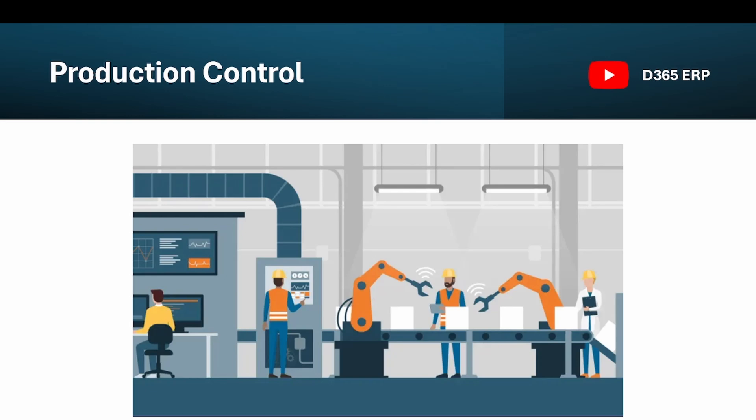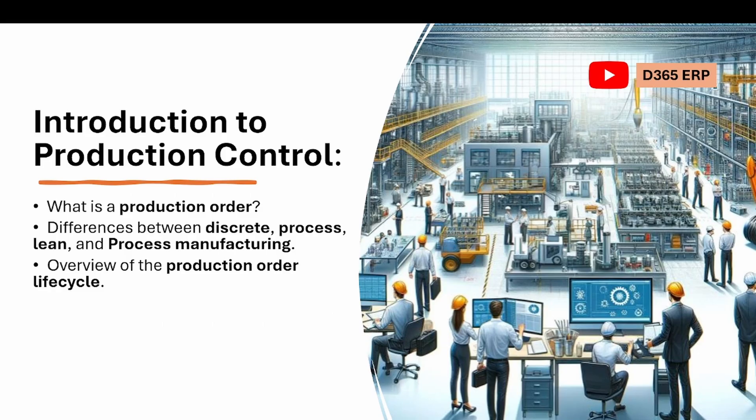Let's discuss what we are going to cover in this Production Control module series. First, we will discuss what is production, what is a production order, and differentiate between discrete, process, and lean manufacturing. Then we will give you an overview of the production order life cycle.